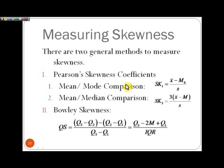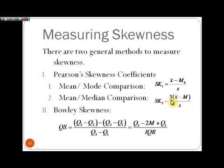Let's look at these skewness coefficients. The first one compares the mean and the mode: take the mean minus the mode and divide by the standard deviation. This is used when we have limited information about a graph. The most common type is Pearson's skewness coefficient for the mean and the median: take the mean minus the median, triple that difference, and divide by the standard deviation. It's multiplied by 3 to lengthen out the numbers so we can better see the difference.